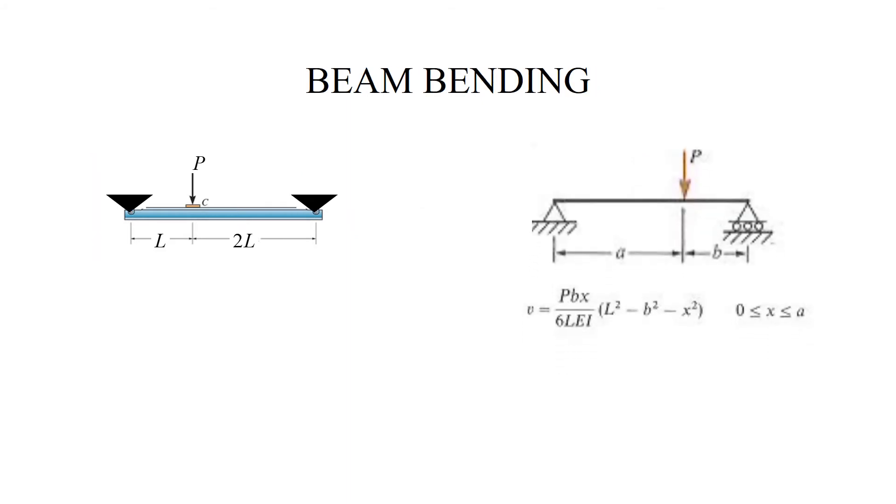Beam bending. Of course, we have a table for this and I will use this table by setting B equal to 2L, x equal to L. This gives me the expression for the deflection of the beam under the force P with the provision that the supports are classical, so a roller and a pin.